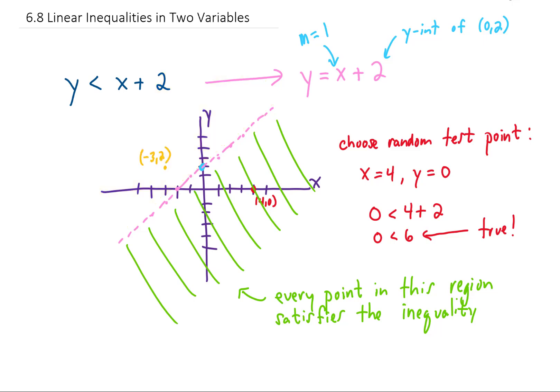For example, if we took the point (−3, 2) and plugged that into the inequality, we get 2 is less than negative 3 plus 2. That gives us 2 is less than negative 1, which is not a true statement. That's why this point is not included in the solution to the inequality.